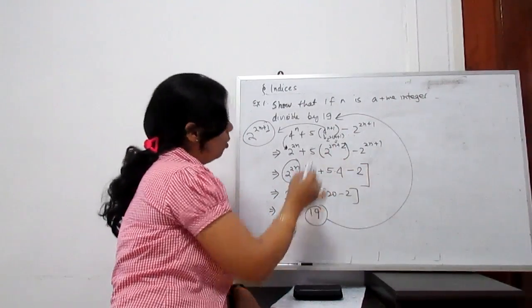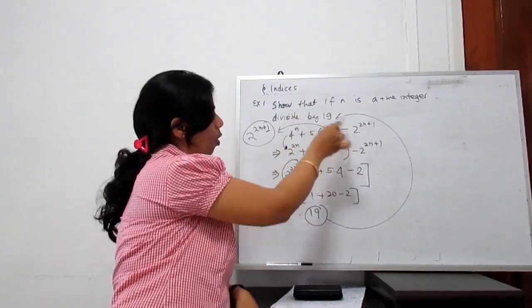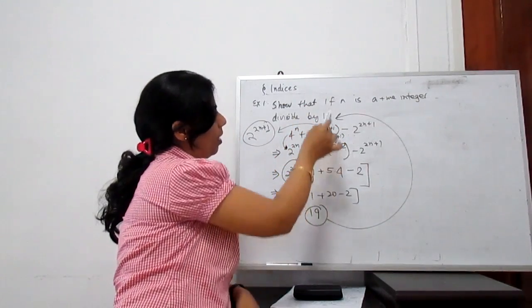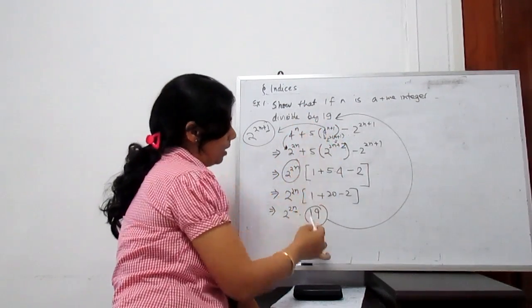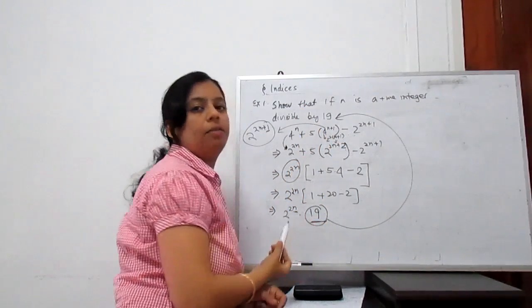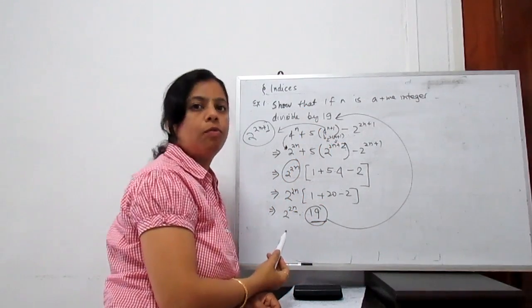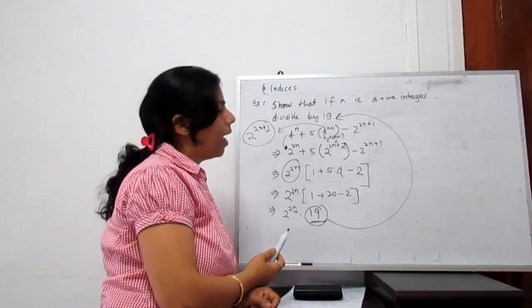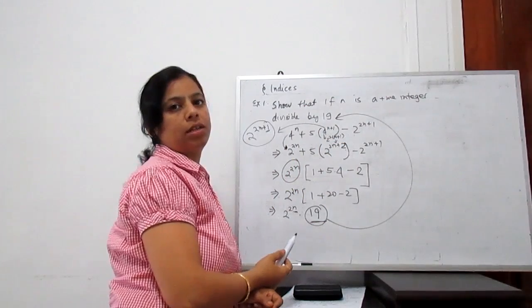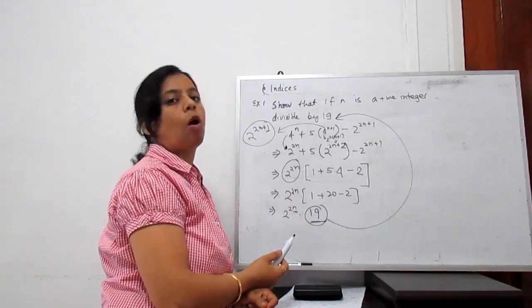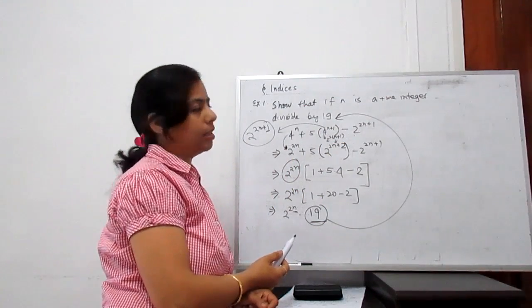Simplifying: 1 plus 20 minus 2 gives 19. So this whole expression is 2 to the power 2n times 19, and since n is a positive integer, we can prove that this expression is a multiple of 19. Hence proved.